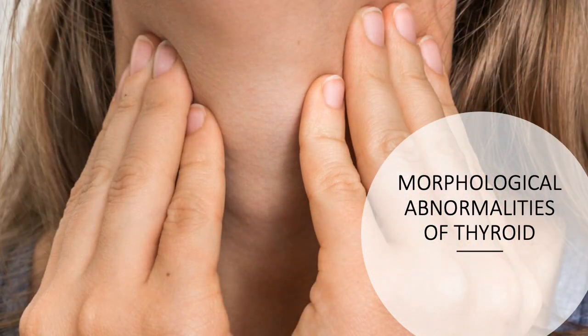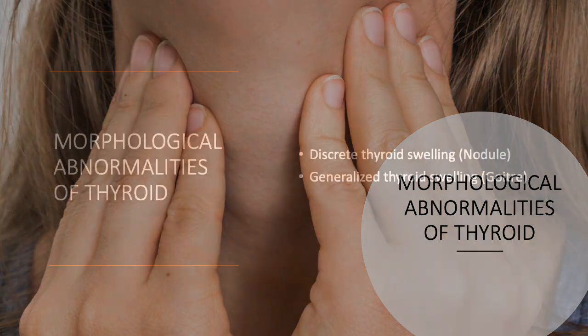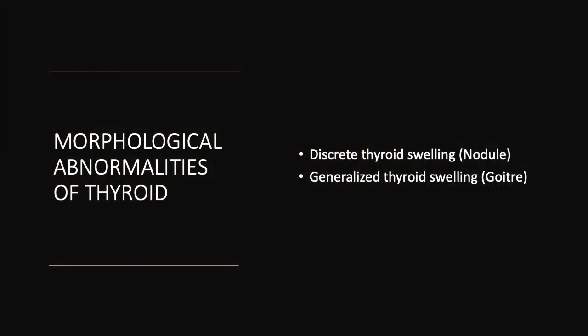Hi, welcome back. In this lecture we will discuss the morphological abnormalities of the thyroid, concentrating on how variable the thyroid enlargement is. There are two kinds of morphological abnormalities of the thyroid gland: it can have a discrete thyroid swelling or a generalized thyroid swelling. Discrete thyroid swelling is called a nodule, and a generalized thyroid swelling is called a goiter.